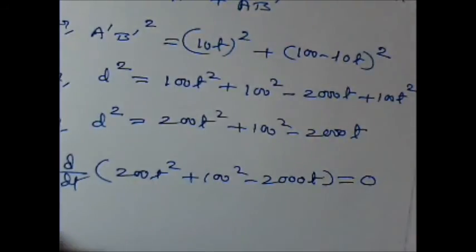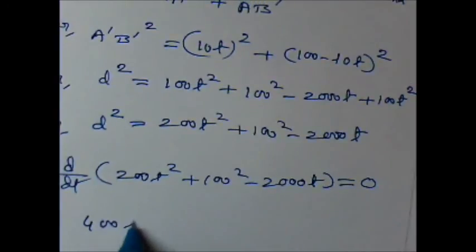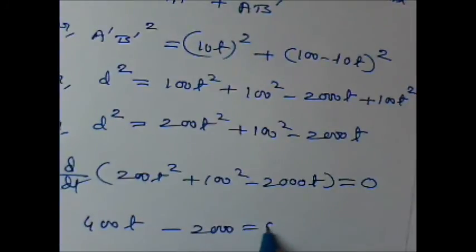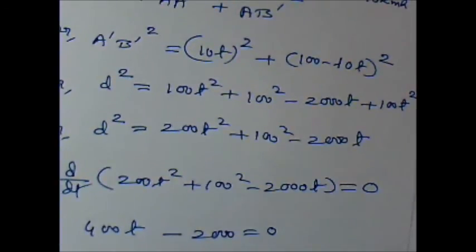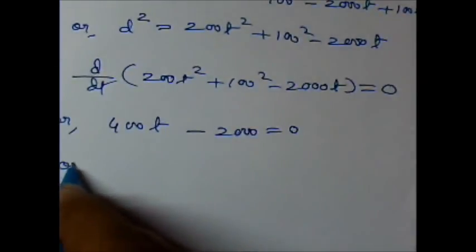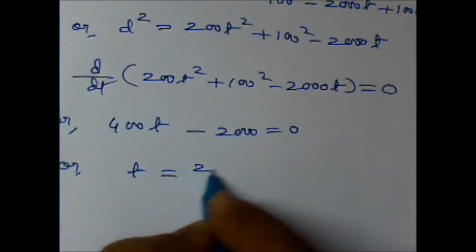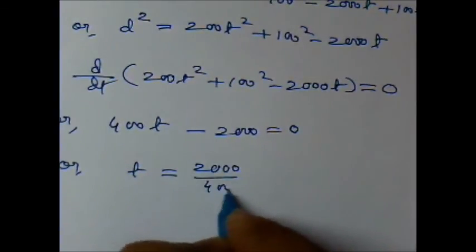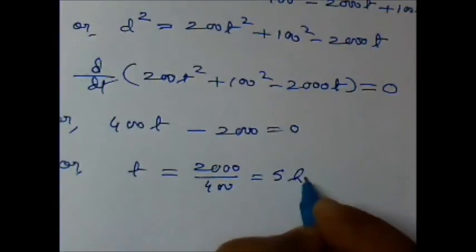So this will become 400T, this will become 0, minus 2000 equals 0. So this will give me T equal to 2000 by 400, that is 5 hours.